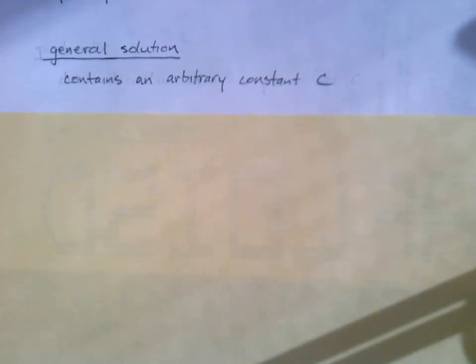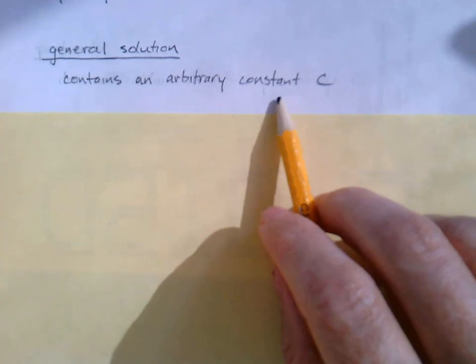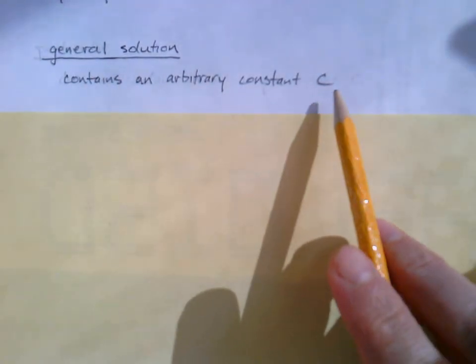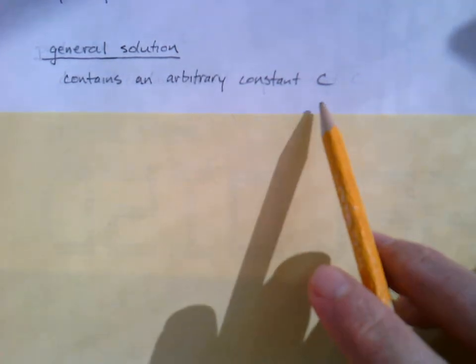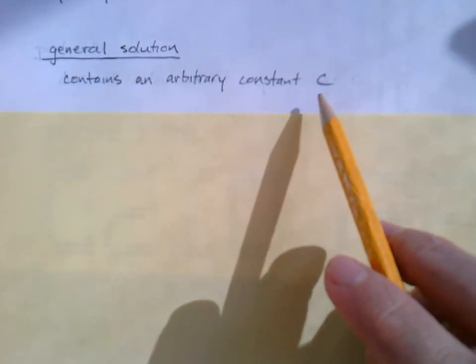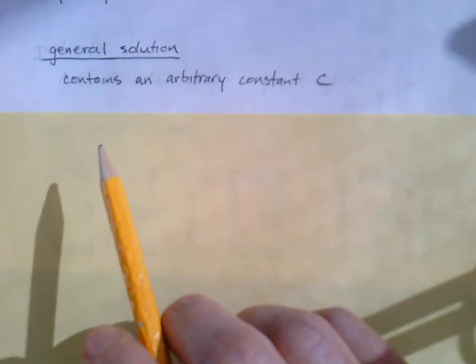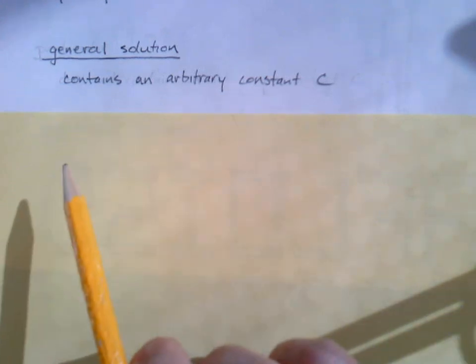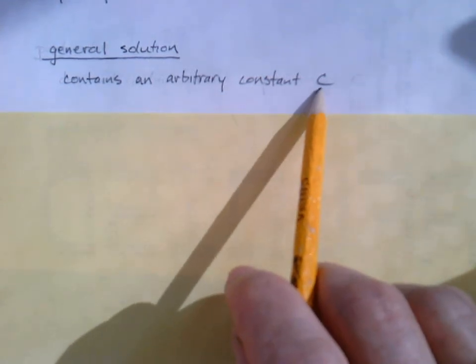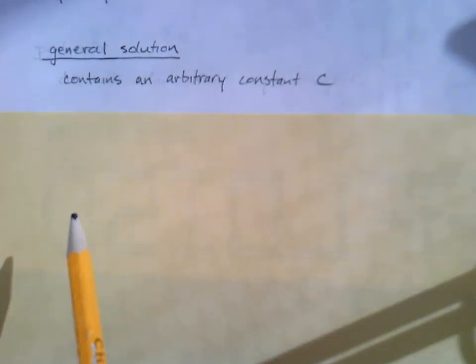Let's define some clear language for what we've seen. The two different types of solutions: when it's a function we call it an explicit solution — put simply, when it's solved for Y. We saw that in the very first example: Y equals C times x-cubed, which was an explicit solution. A general solution contains an arbitrary constant C, because the generality means you can pick whatever you want for C, resulting in infinitely many solutions — sometimes called a family of solutions.